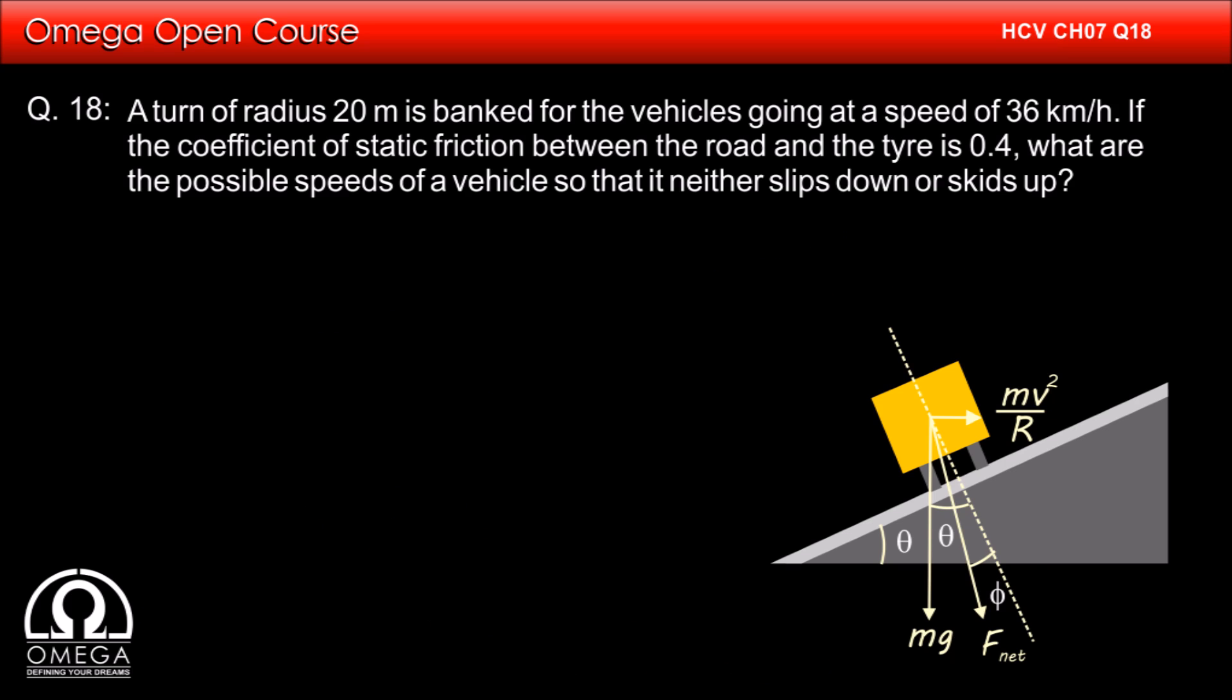If the speed of the vehicle is increased, the centrifugal force will increase, increasing the angle that F net makes with the vertical. When this angle becomes more than phi on the other side of the normal, the vehicle will start skidding up.